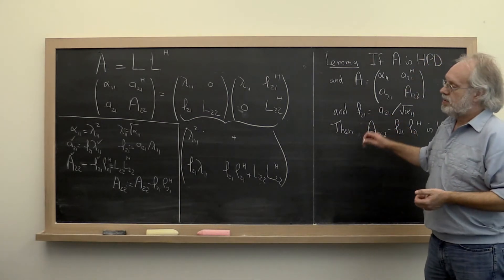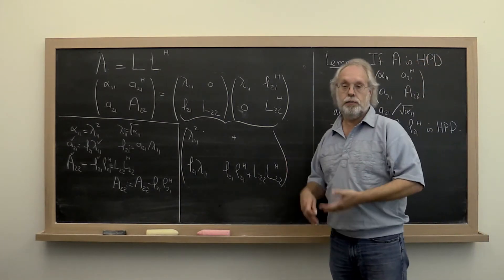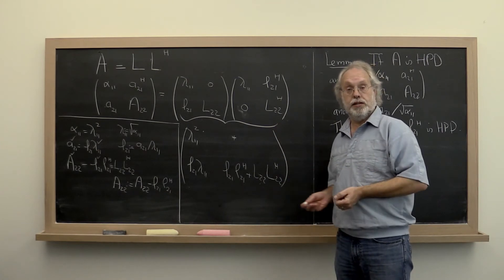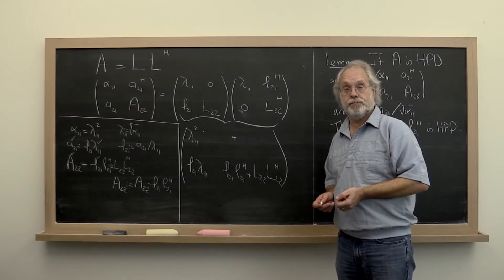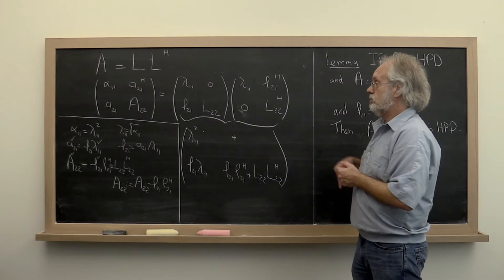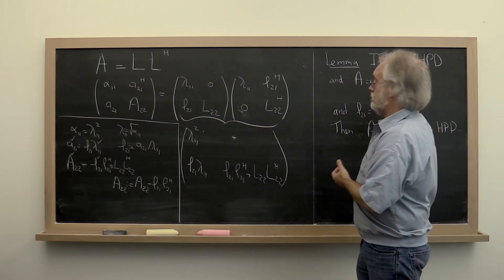Then A 2 2 minus L 2 1 times L 2 1 Hermitian transpose is Hermitian positive definite. If we can prove that then you can kind of see how the proof by induction falls in place.